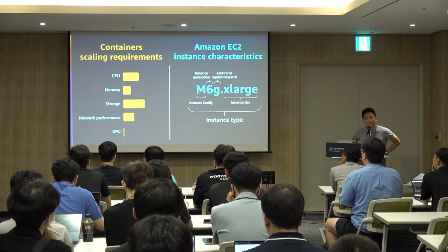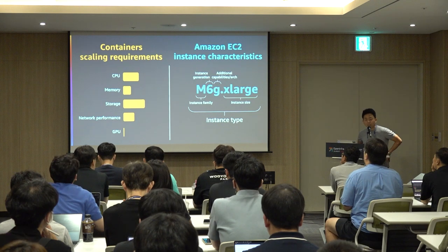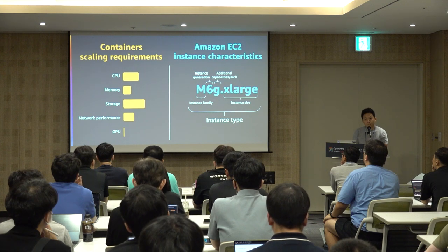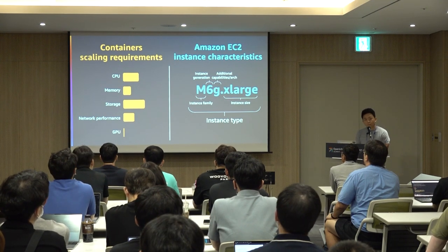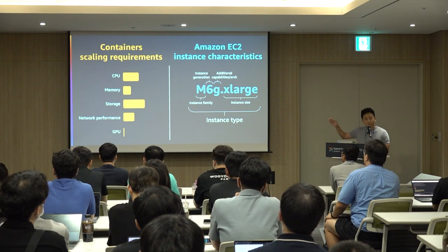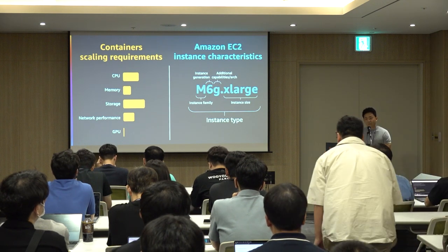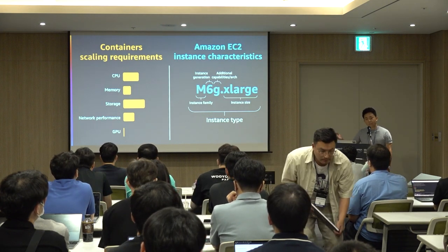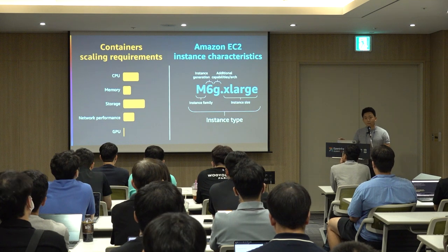Containers have different scaling requirements such as CPU and memory depending on your workloads and traffic patterns, and that may change over time. AWS provides different types of EC2 instances suitable for different workloads — different instance families with different capabilities, optimized for compute, memory, network, storage, or with GPUs. You need the flexibility to choose the right instance to run and scale your containers.